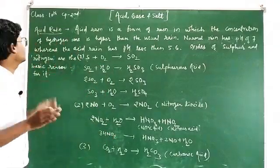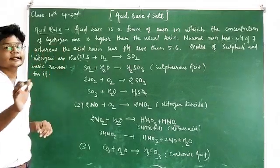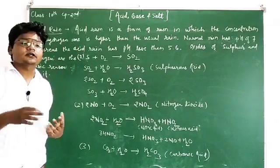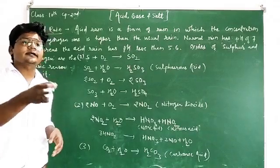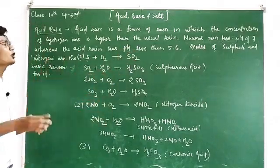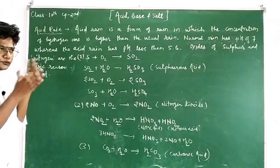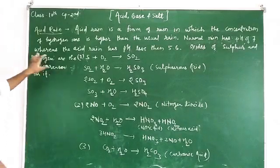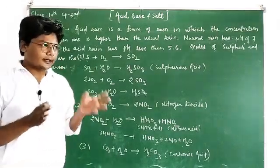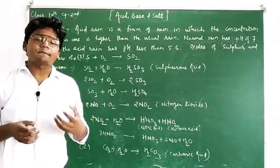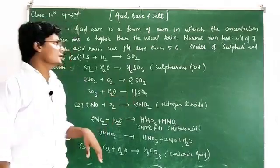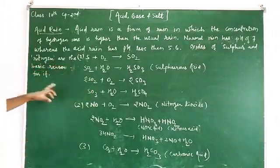Acid rain is a form of rain in which the concentration of hydrogen ion is higher than that of usual rain water. Normal rain has a pH of 7, whereas acid rain has a pH less than 5.6. Whenever the pH falls below 5.6, it is classified as acid rain. Oxides of sulfur and nitrogen are the basic reason for it.